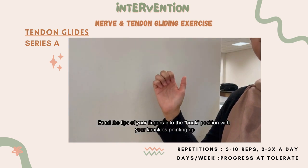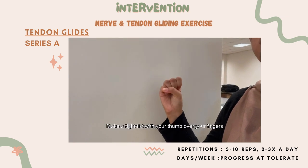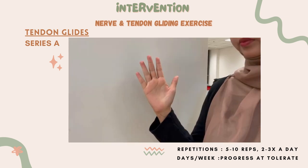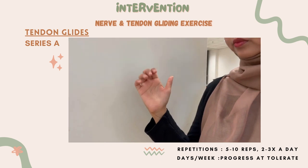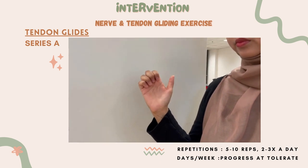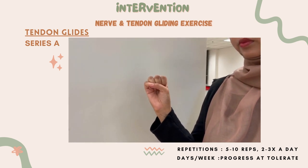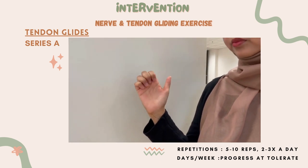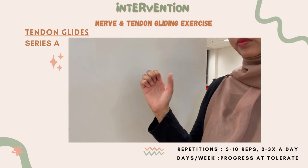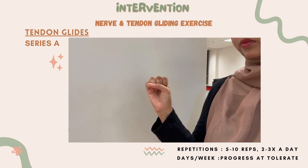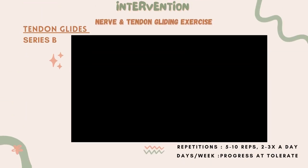Bend the tips of your fingers into the hook position with your knuckles pointing up. Make a tight fist with your thumb over your fingers. Do 5 to 10 repetitions, 2 to 3 times a day, and progress at a tolerable rate.